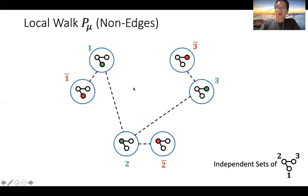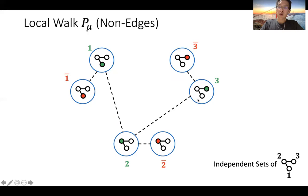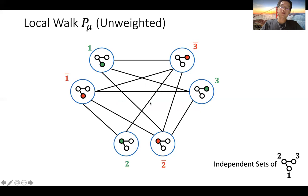The non-edges of the local walk correspond to constraints of the problem. For instance, three non-edges correspond to the constraint that any vertex cannot be simultaneously assigned both red and green. Two non-edges correspond to the constraint that neighboring vertices cannot both be in the independent set, since neighboring vertices cannot both be assigned green. All other pairs are allowed as edges.